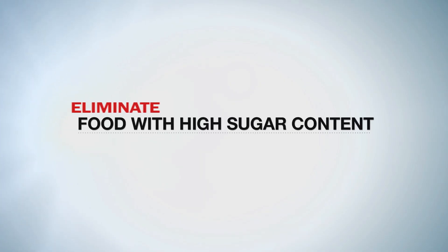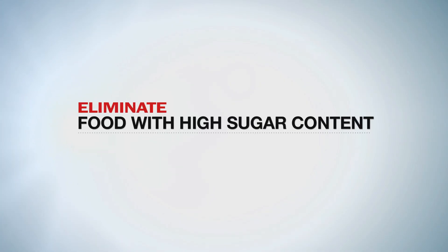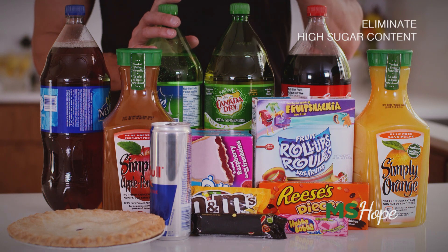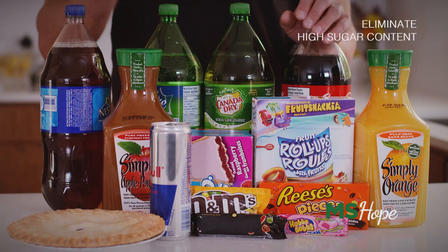You also need to eliminate foods with high sugar content. This includes soft drinks, candy, chocolate bars, desserts, and fruit juices with high sugar, like orange juice or apple juice. Now that you're checking labels at the supermarket, you can't buy any product with sugar as the first, second, or third ingredient on the label.